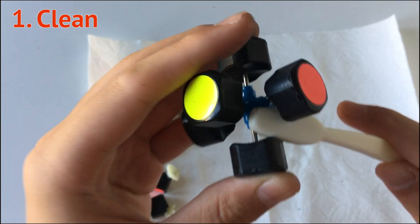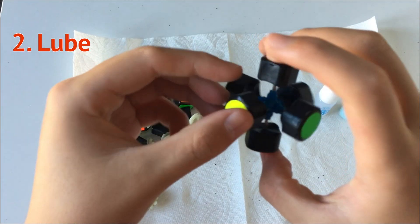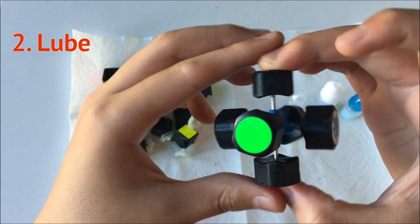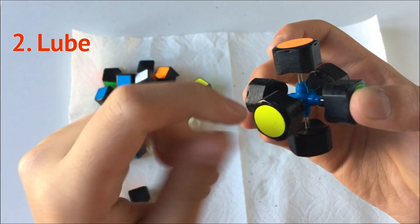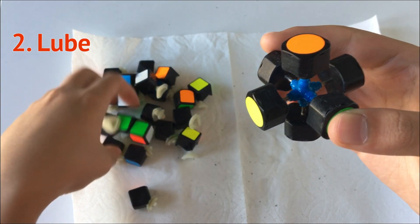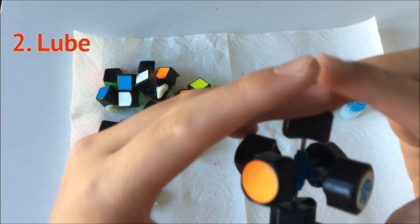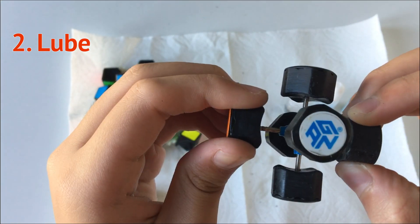Now let's get into lubing. All right, so for lubing what I like to do is first assemble one layer and then lube the core, and then assemble two layers and then lube the pieces, and then at last finish it off.